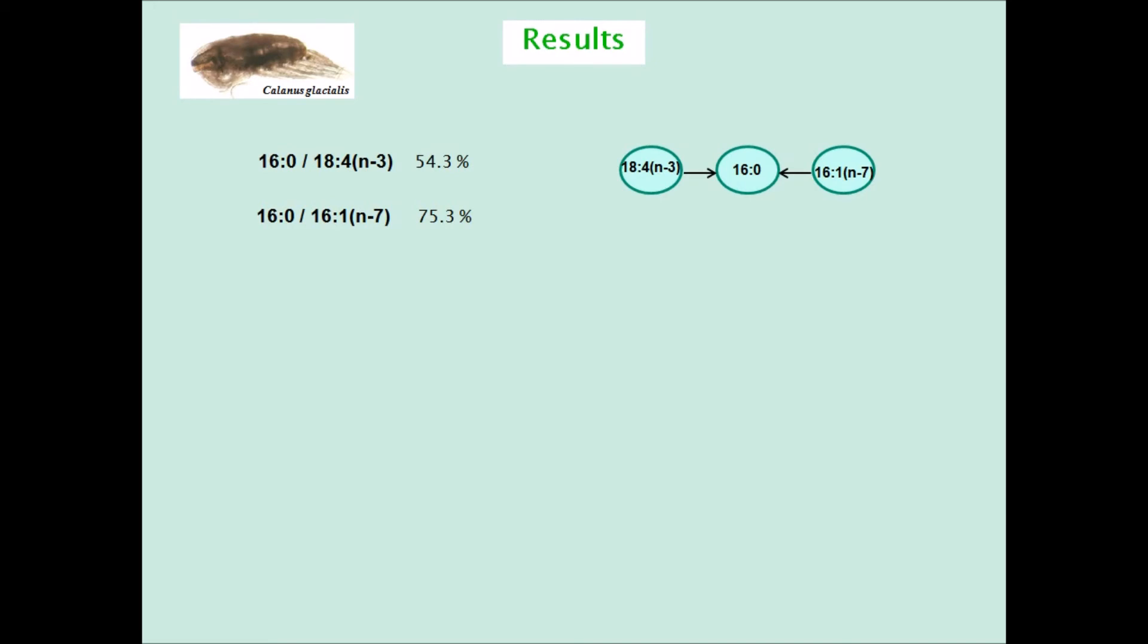And so we carry on for the third fatty acid ratio pair, a separate pair that's linked separately from the others. And the fourth one actually links the two sets together, and now we're up to 85.1% variance explained. The fifth log ratio pair brings us up to 88.4%.